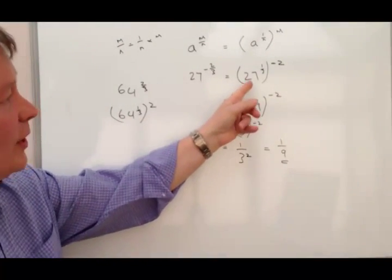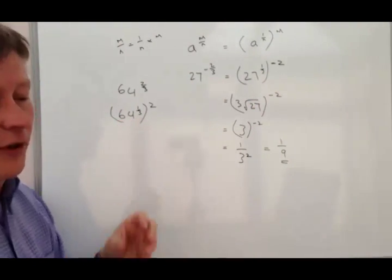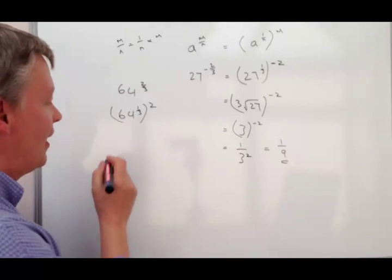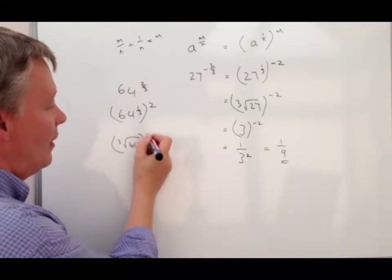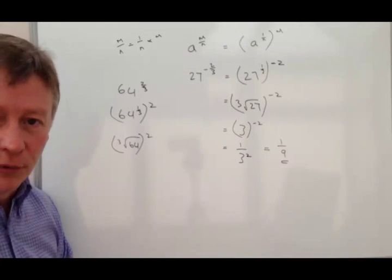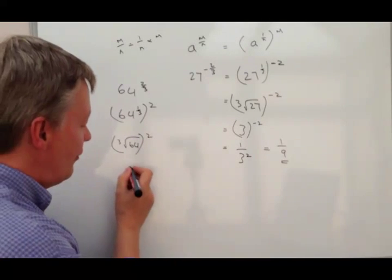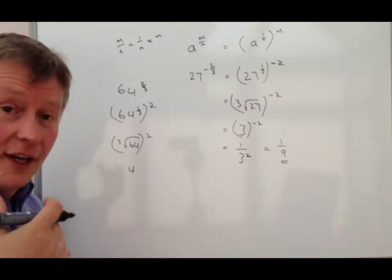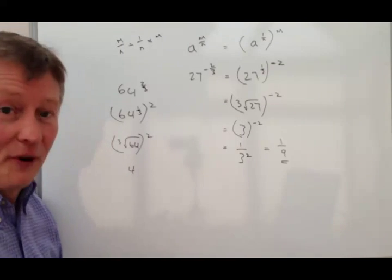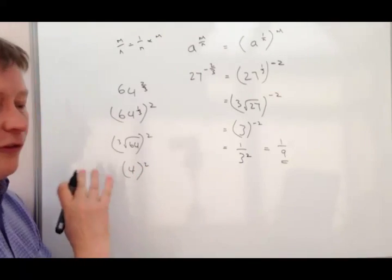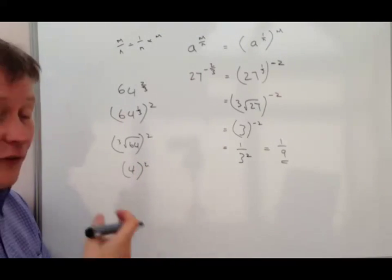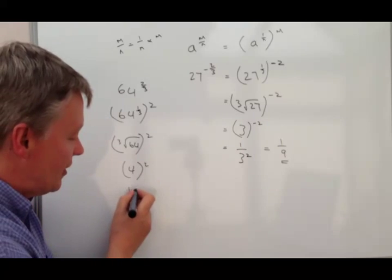Well, 64 to the power of 1 third, we're looking for the cube root of 64 and that's going to be squared. Well the cube root of 64 is 4 because 4 times 4 times 4 is 64, and that's going to be squared. Well 4 squared is the same as 4 times 4 which is 16.